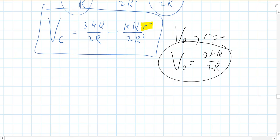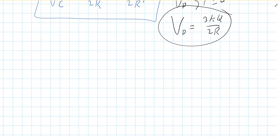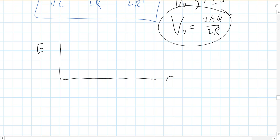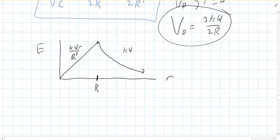Now we're going to graph the electric field as a function of radius. Inside the ball it's a linear function: kq times little r over big R cubed. Outside, it's an inverse squared: kq over little r squared. They meet at the surface of the ball at kq over big R squared — that's the maximum electric field.